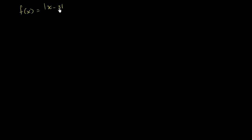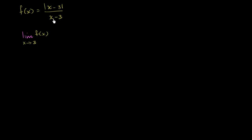Let's say that f of x is equal to the absolute value of x minus 3 over x minus 3. What I'm curious about is the limit of f of x as x approaches 3. From inspection, you can see that the function is not defined when x is equal to 3 — you get 0 over 0. It's not defined.